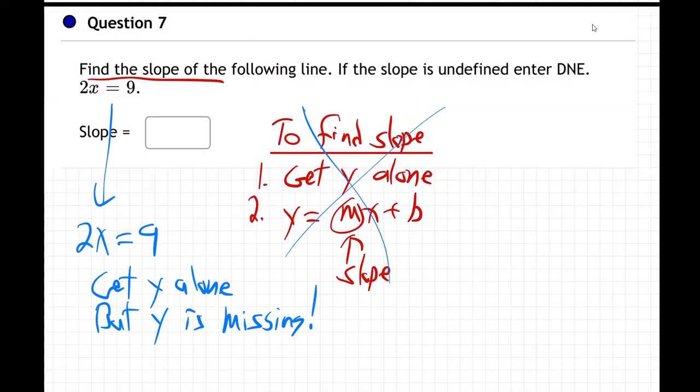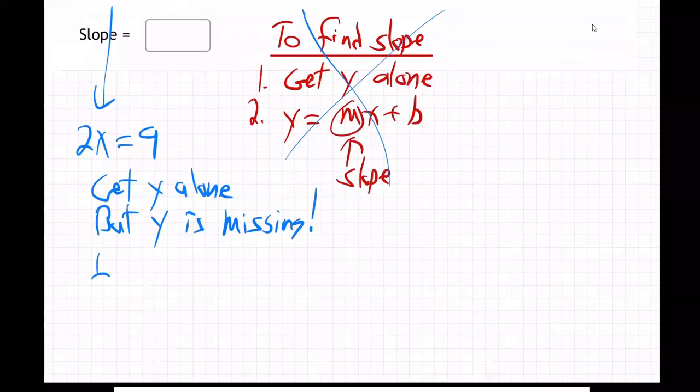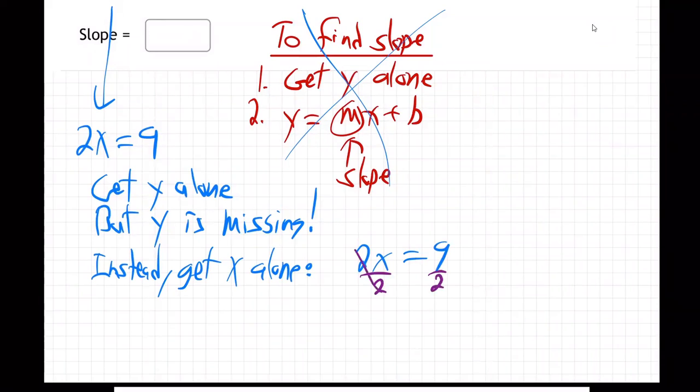Well, okay, then what do you do? Well, instead, get x alone. Since y is not even there, we have no choice. So if you have 2x = 9, go ahead and get x alone. How do you get x alone? Divide by 2 on both sides.